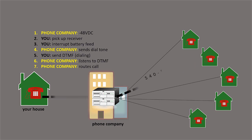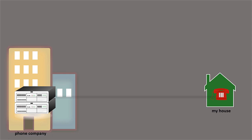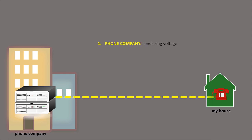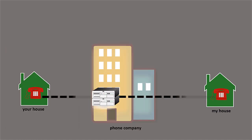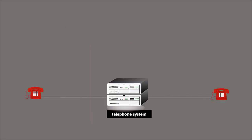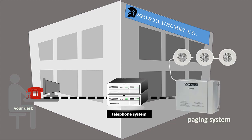Let's say that you dial the number from my house — let's take a look at what happens on my end. First, the phone company sends a current called ring voltage along the two wires to the phone at my house. As the name implies, ring voltage makes my phone ring, so I pick up the receiver to answer. When I do this, the phone company connects our phones to each other directly through the telephone system. This exact same process can take place through a telephone system not located at the telephone company — most organizations use a very similar system to connect your desk to my desk, or your desk to an overhead paging system.